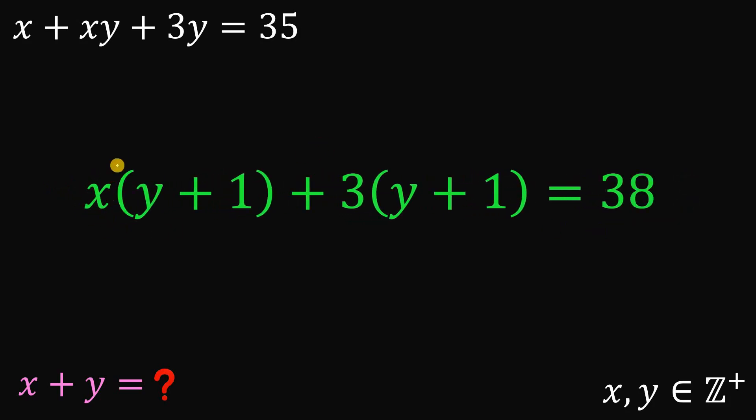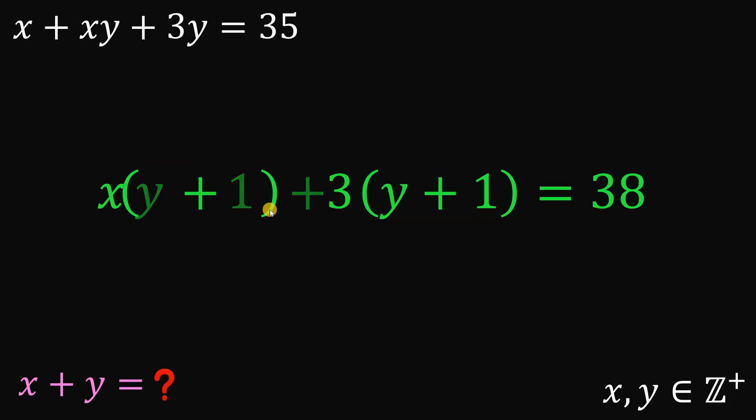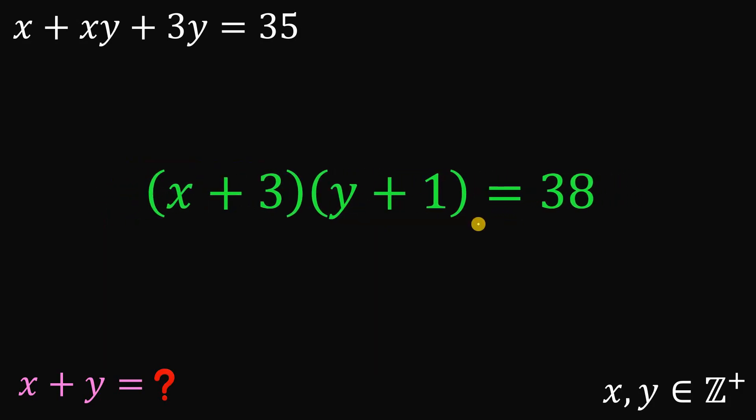Now, we can factor out a common factor of y plus 1 on the left hand side. And if we do that, we get x plus 3 multiplied by y plus 1.